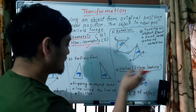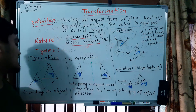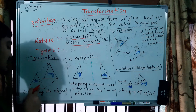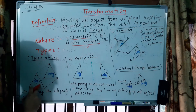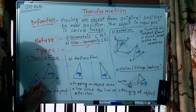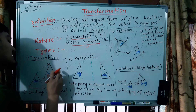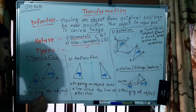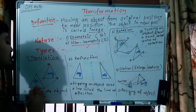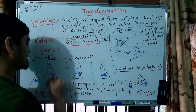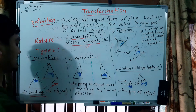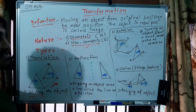The first type is translation. Translation means sliding the object from its original position to a new position. This sliding movement is called translation.